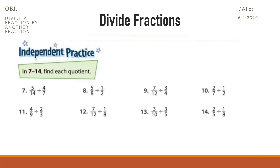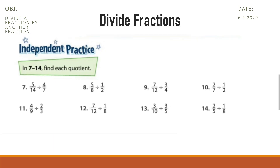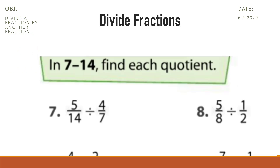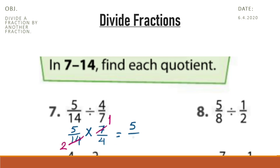On page 613, question number 7: 5 over 14 divided by 4 over 7. Write the dividend and change division to multiplication. The reciprocal of 4 sevenths is 7 fourths. Now we can simplify — divide by 7: 14 divided by 7 is 2 and 7 divided by 7 is 1. So, 5 multiplied by 1 is 5 and 2 multiplied by 4 is 8.